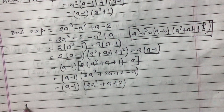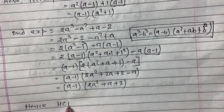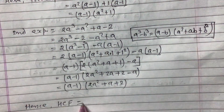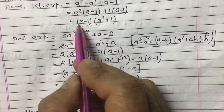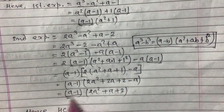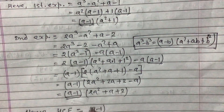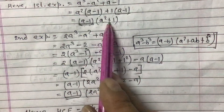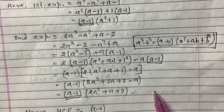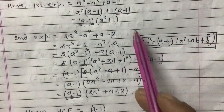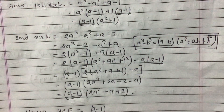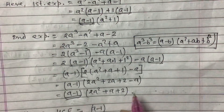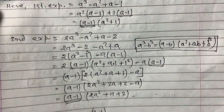Hence the HCF is the common factor of both expressions. The first expression has factors (a - 1) and (a² + 1). The second expression has factors (a - 1) and (2a² + a + 2). Since (a - 1) is common to both, the HCF is (a - 1).